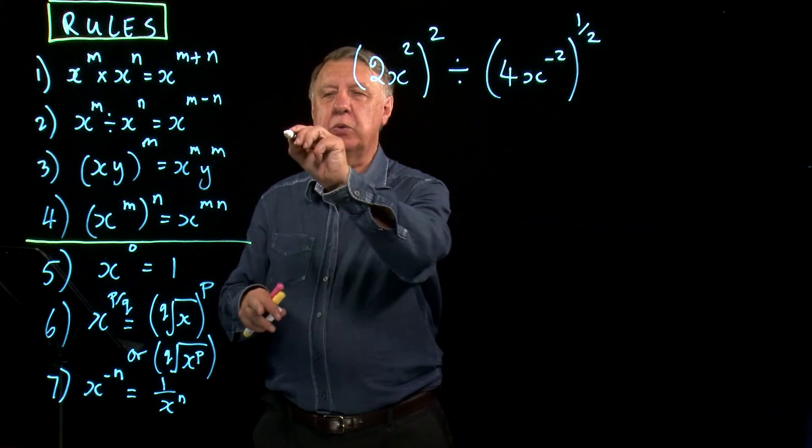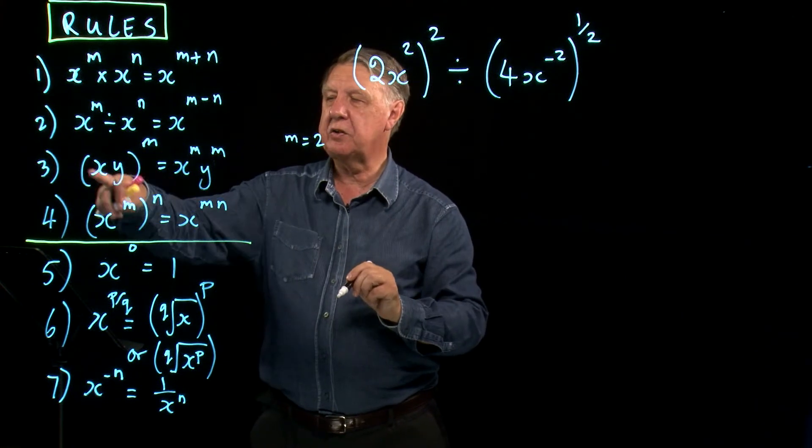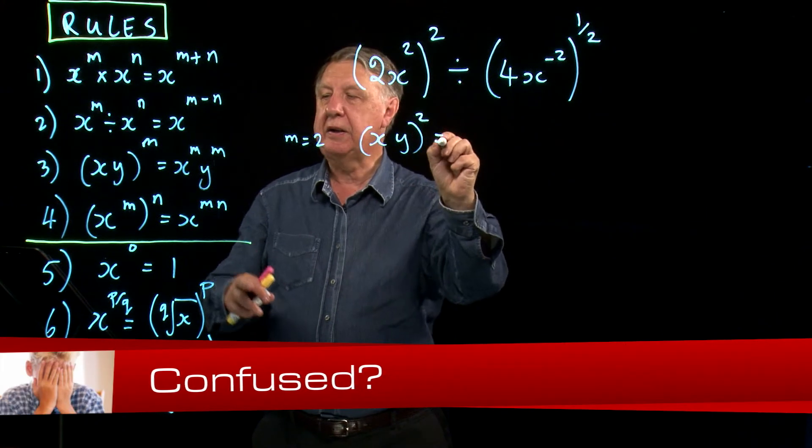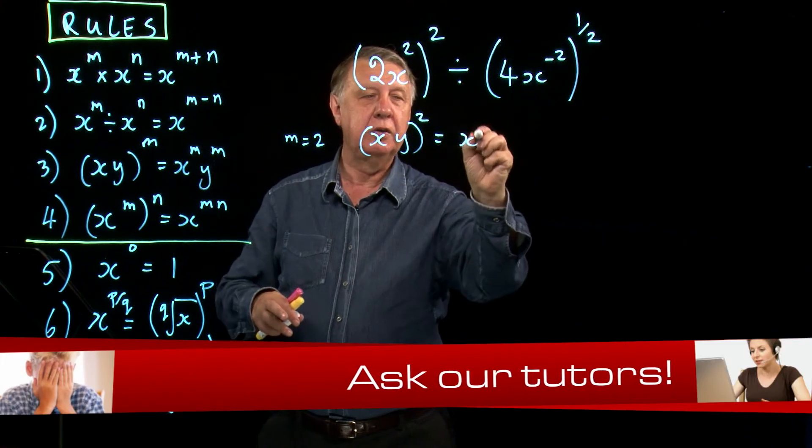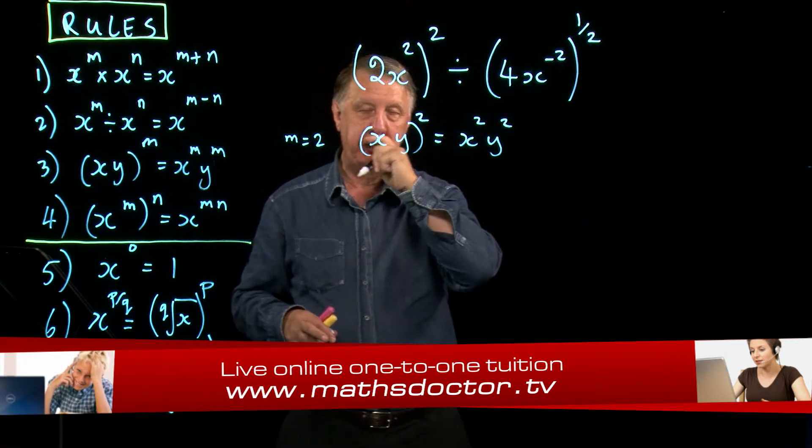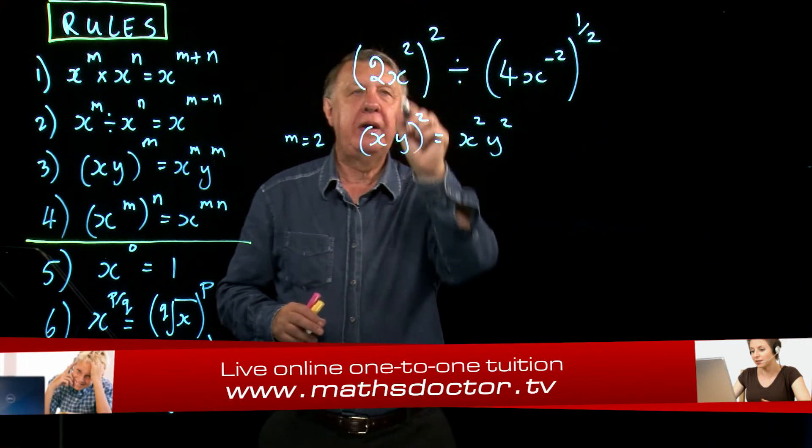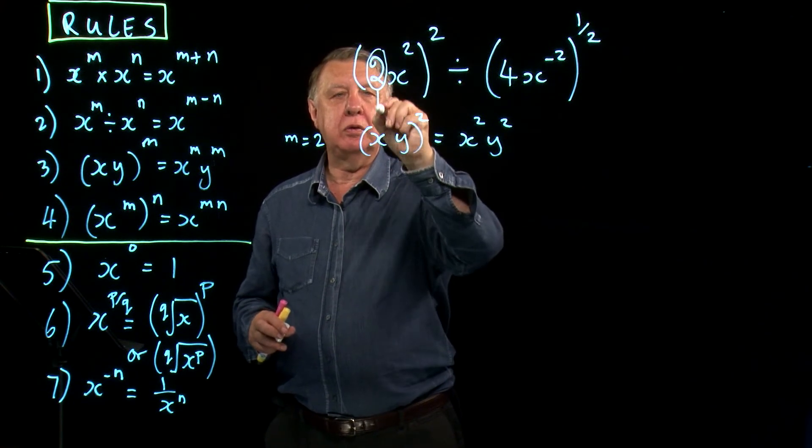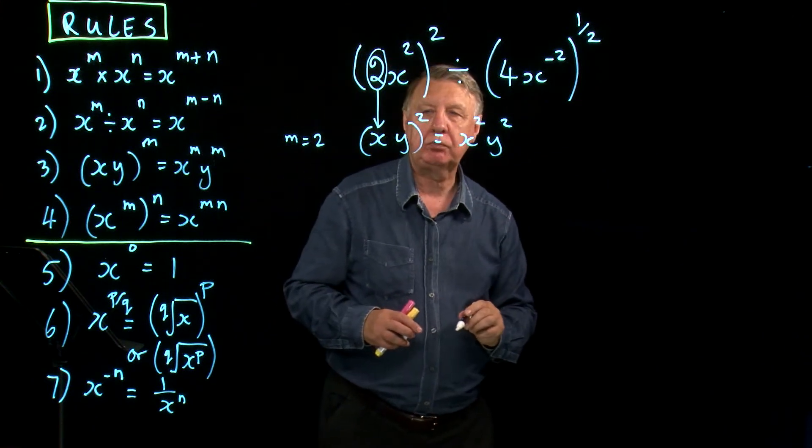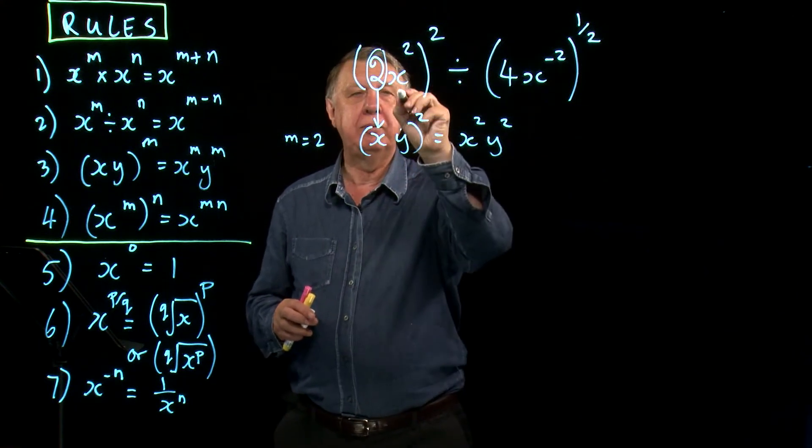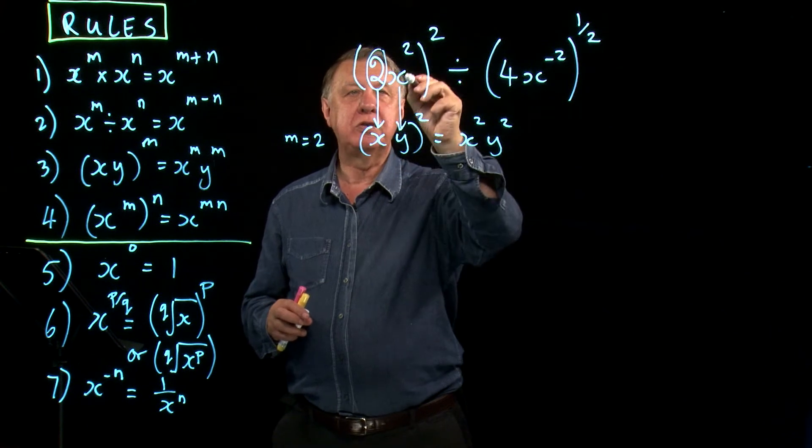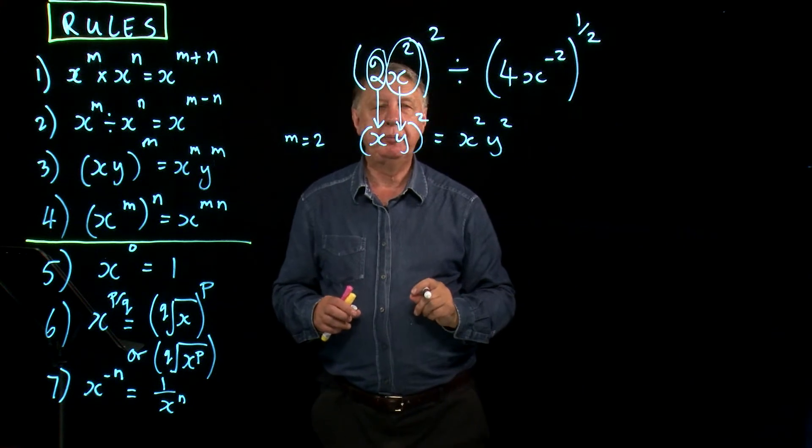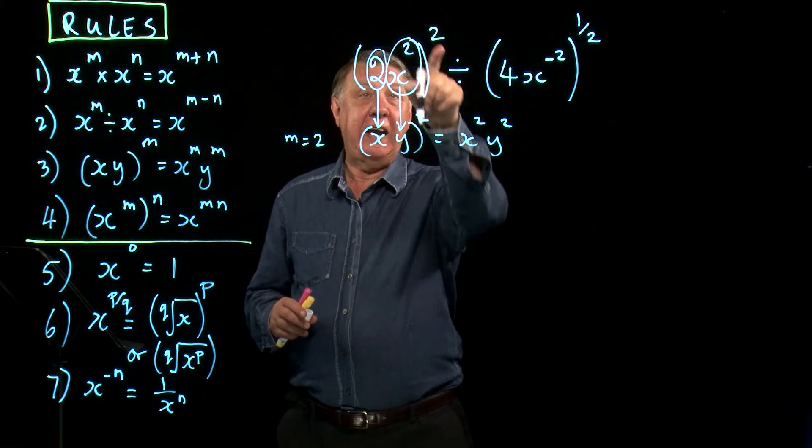So if I put m equal to 2, this rule tells me that (xy)² equals x²y². Now go back to here. 2 is replacing x and instead of y I've got x squared. I hope you can see that clearly.